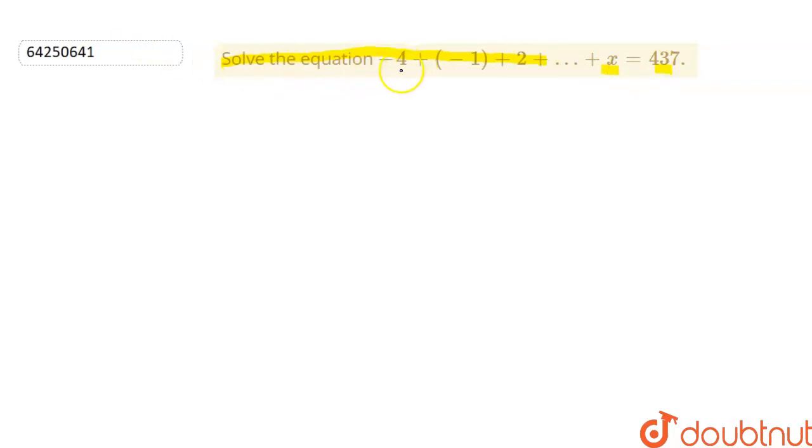We have been given that the sum of an equation is 437, and we need to find x, which is the last term. So a of this equation becomes -4, and d of this equation becomes the difference of the second and first term, that is -1 - (-4), which equals 3.